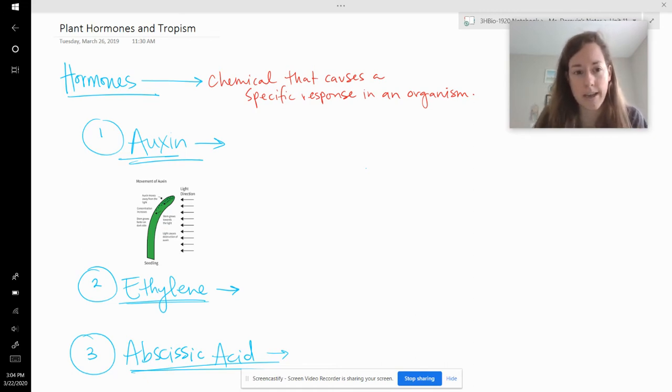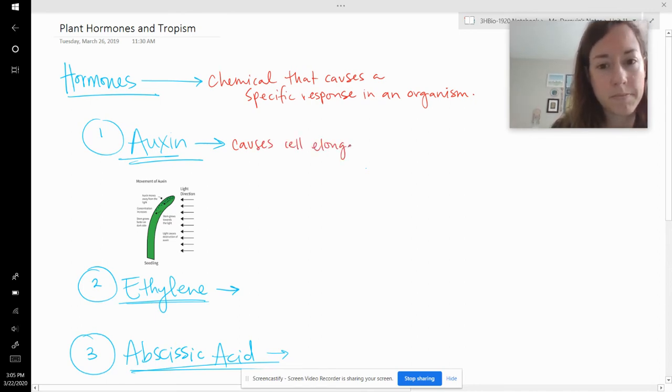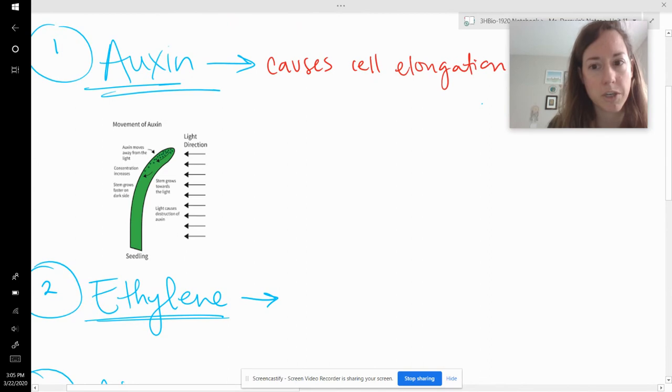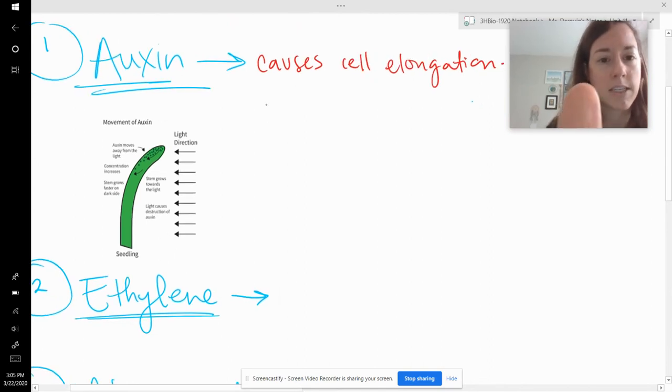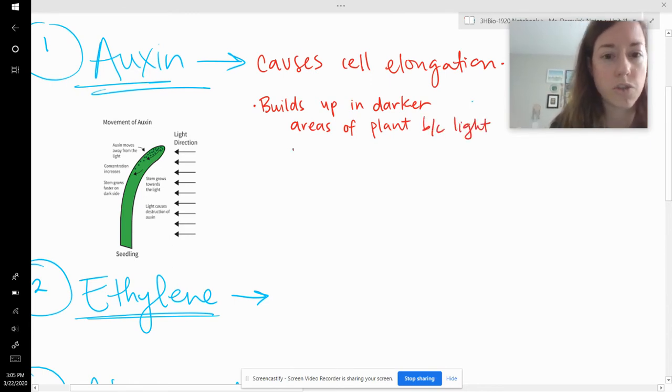So auxin is a hormone that causes cells to elongate and it's used for plants to grow in a specific direction, like towards the sun. So auxin causes cell elongation. It actually is broken down by light. And so this little picture here is kind of showing that auxin builds up in darker areas of the plant because light destroys it.